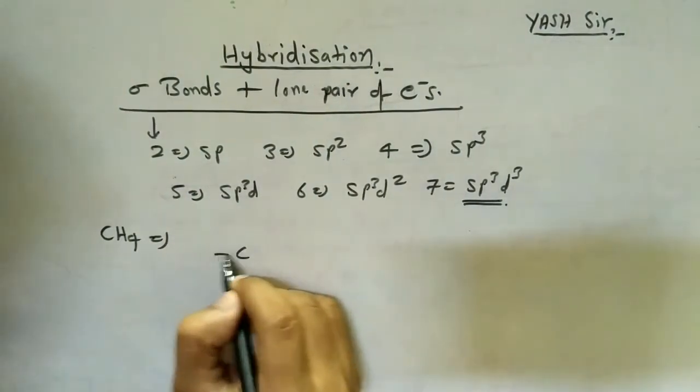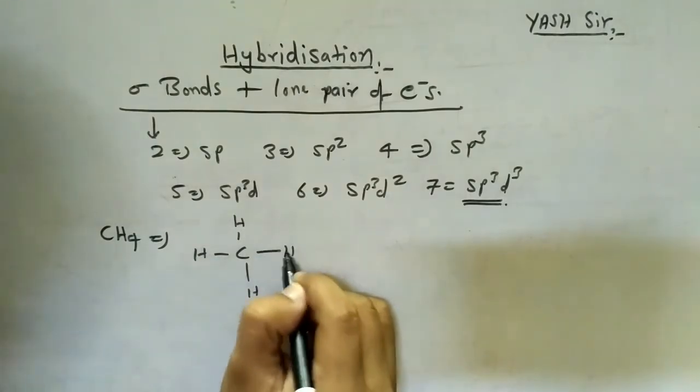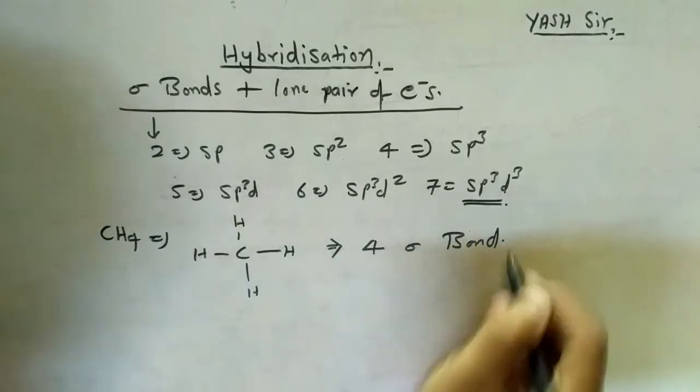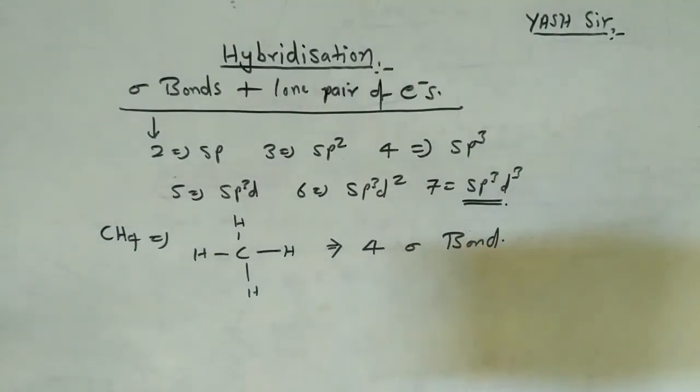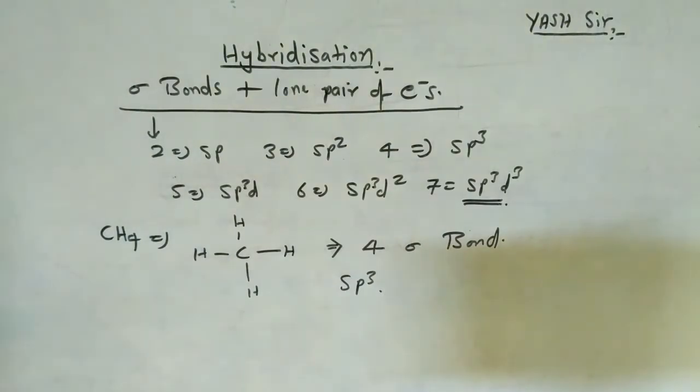Methane has a tetrahedral structure with 4 sigma bonds. So there are 4 sigma bonds, and the hybridization will be sp3.